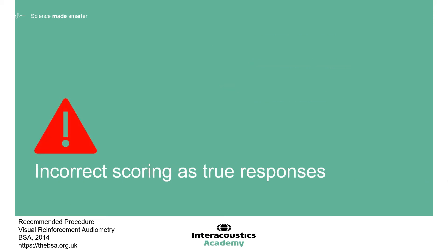Accepting a movement other than a clear head turn, or accepting a checking response, is one of the most problematic errors made in VRA testing. It is important to focus on that clearly defined head turn response, and for the testers to be confident in what that head turn response looks like for an individual child. Being able to differentiate between that and a checking response, which is often much faster and more brief, is crucial. Using no sound trials throughout testing can help to identify checking responses.